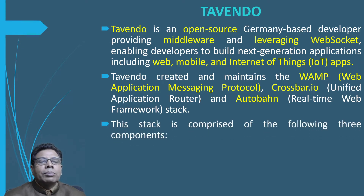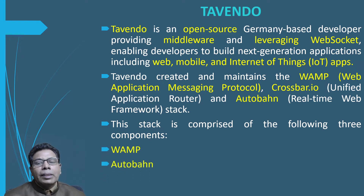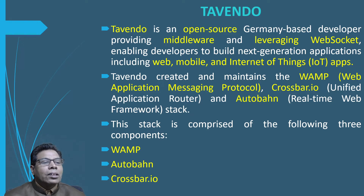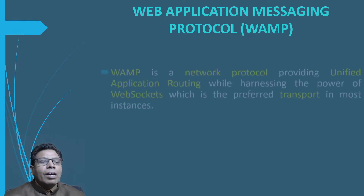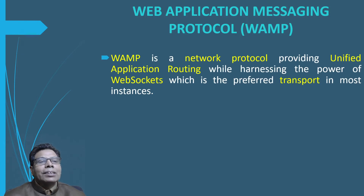This stack is comprised of the following three components: WAMP, Autobahn, and Crossbar IoT. WAMP is a network protocol providing unified application routing while harnessing the power of web sockets, which is the preferred transport in most instances.